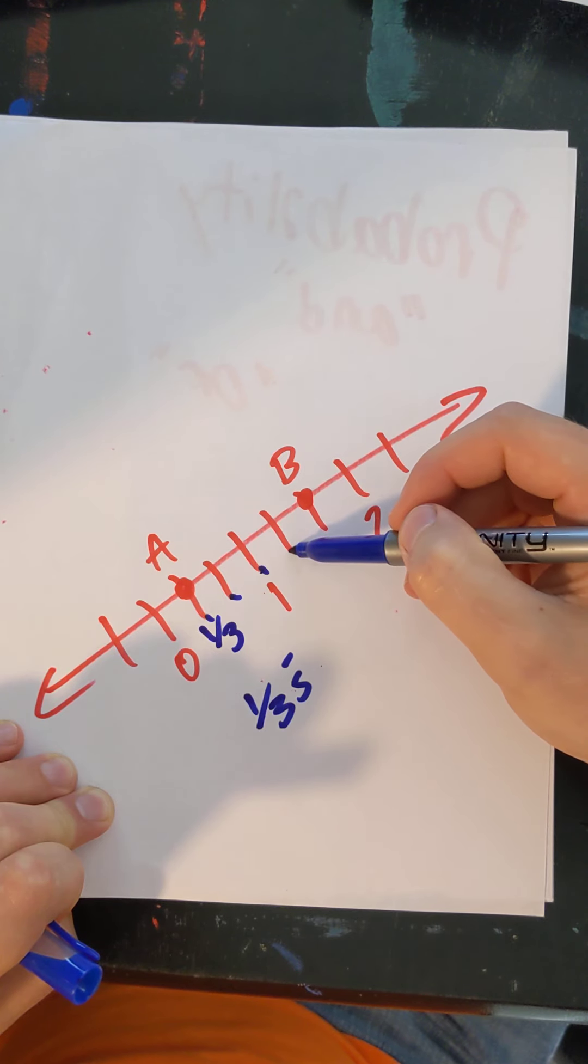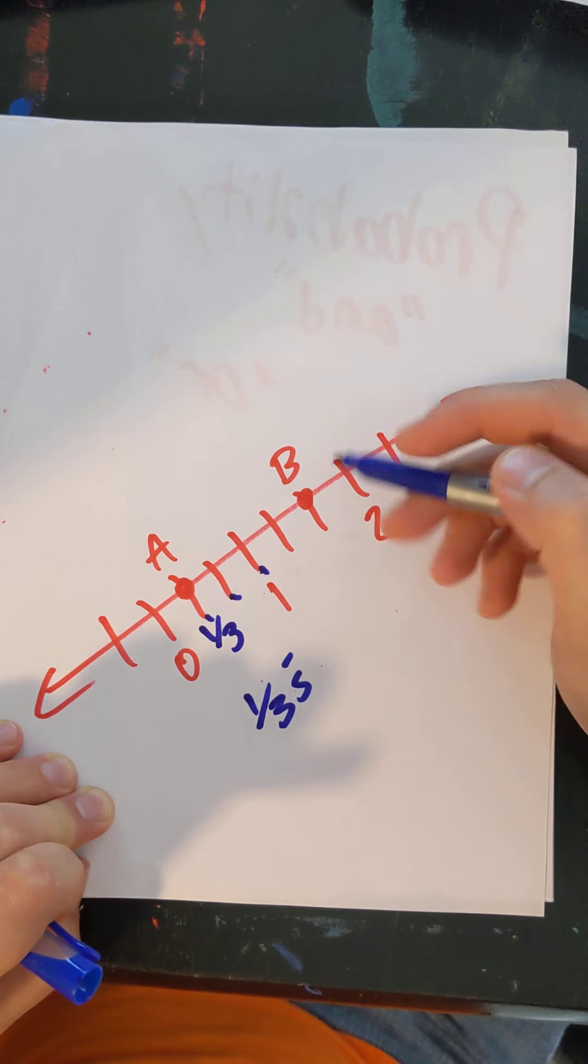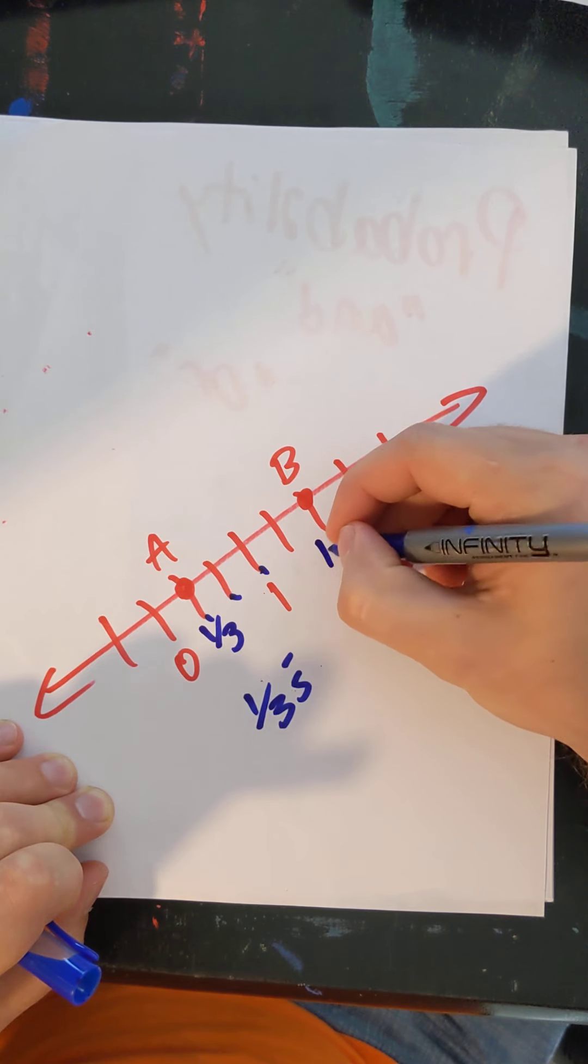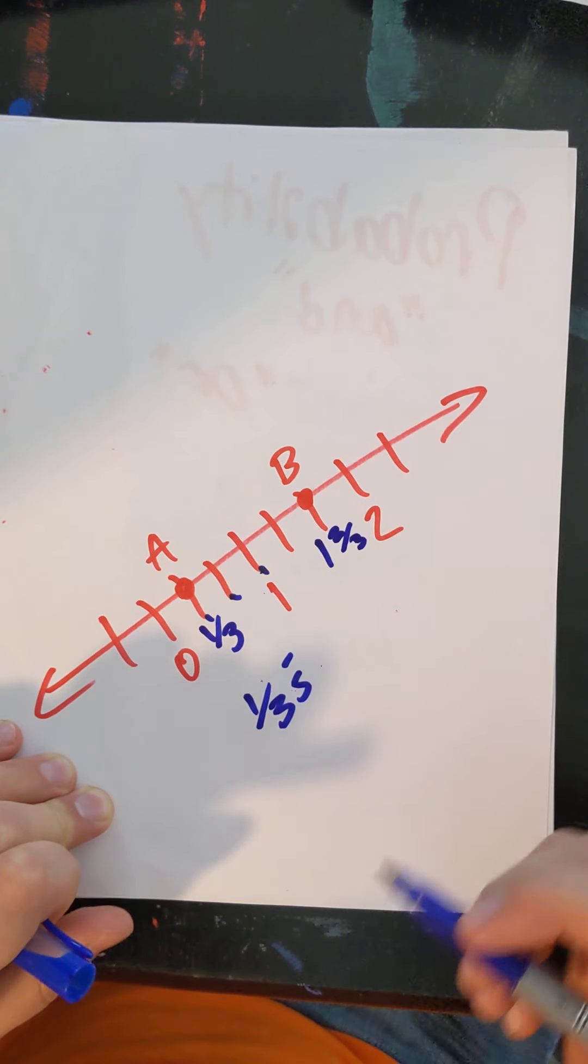Or one and one third, five thirds, or one and two thirds. It doesn't really matter which one you go with. I'm going to go with the mixed number.